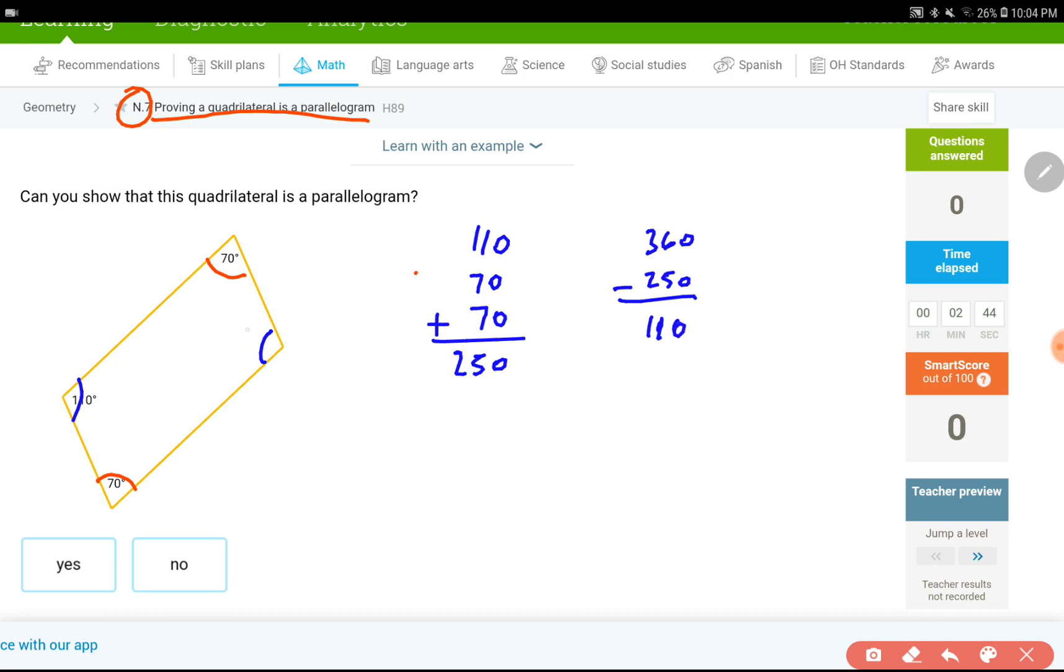So, the fourth angle is equal to 110 degrees. Now I do know that they all add up to 360 degrees and all of the opposite angles are congruent. So this would be a yes.